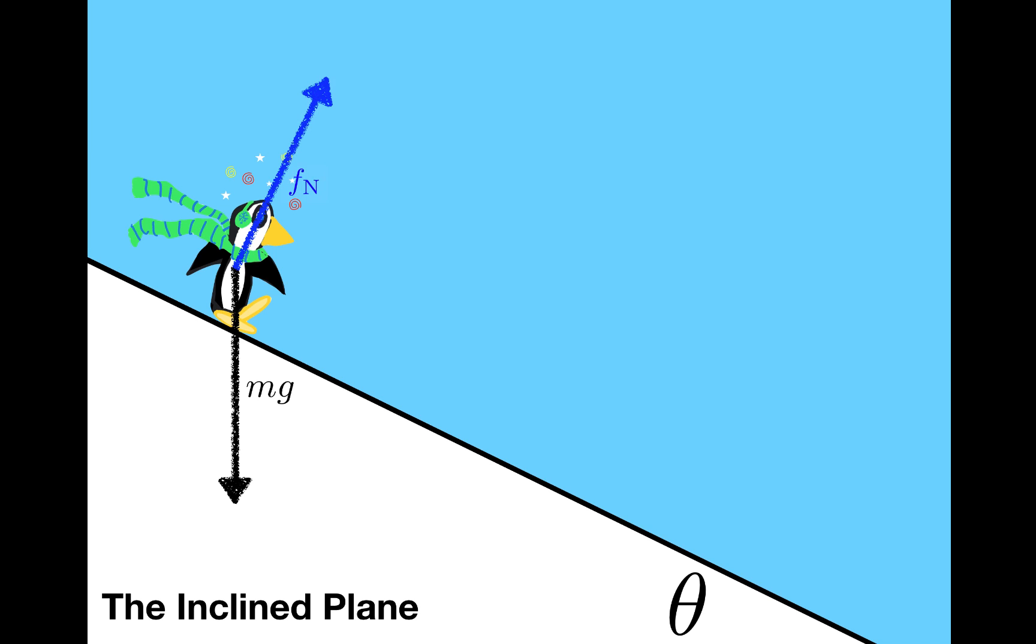There's also a normal force acting on the penguin. The normal force has to be perpendicular to the supporting surface. If there were a frictional force acting in this problem, it would be along the incline in this direction, but I'm going to assume no friction for this example. So that's it. There are just two forces acting on the penguin in this problem.